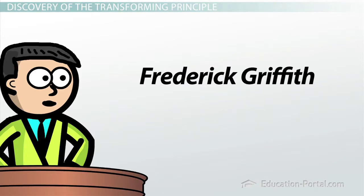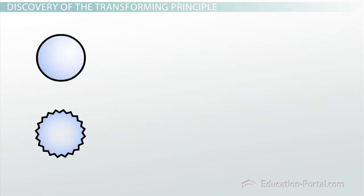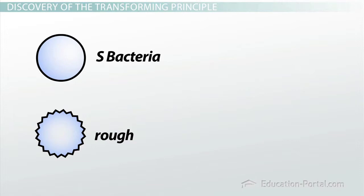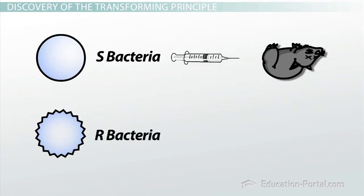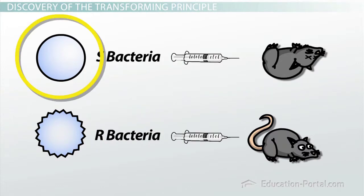Griffith was studying the bacteria that causes pneumonia. He observed two variants of the same bacteria under the microscope. One had a smooth outer appearance — let's abbreviate that bacteria as S-bacteria. The other had a rough appearance — let's abbreviate those as R-bacteria. If he injected a mouse with S-bacteria, the mouse died. If he injected a mouse with R-bacteria, the mouse lived. We would later discover that the S-bacteria is smooth because it has a protective coating which helped it survive in the mouse.